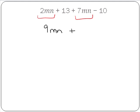And we have 2 terms just numbers. So 13 minus 10 will give us 3.